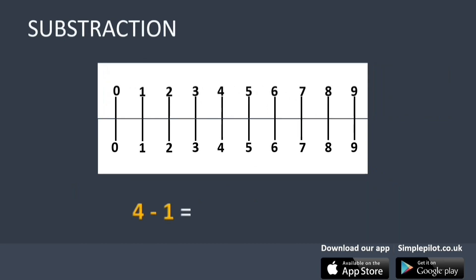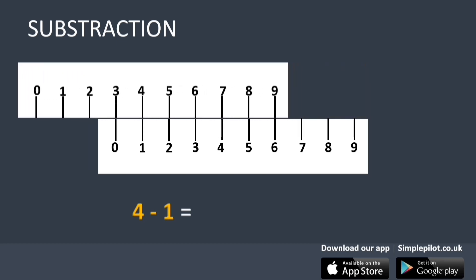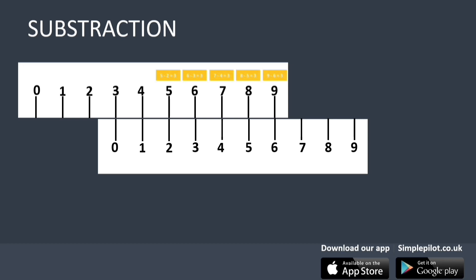Align 4 on the top ruler with 1 on the bottom ruler, and by referring to 0 on the bottom ruler, you can read off the answer: 3 from the top ruler. You just solved 4 minus 1 equals 3. With the same relative position of the two scales, you have also solved 5 minus 2 equals 3, 6 minus 3 equals 3, 7 minus 4 equals 3, 8 minus 5 equals 3, and 9 minus 6 equals 3.